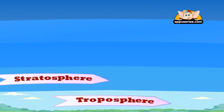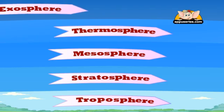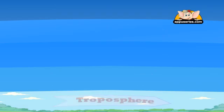The Earth's atmosphere has five layers: Troposphere, Stratosphere, Mesosphere, Thermosphere and Exosphere. Atmospheric gases become thinner as you go higher.